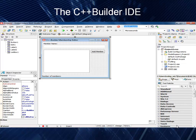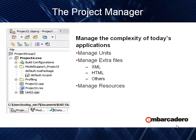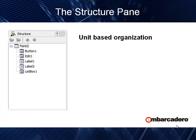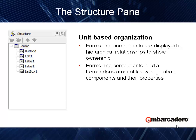C++ Builder IDE has been recognized as one of the fastest ways to develop applications, with all of the bells and whistles you would expect from a cutting-edge development environment. We start with the project manager, which allows us to manage the entire project — its units, additional files whether XML, HTML, or other formats — as well as resources like icons and build management. The structure pane gives us a unit-based organization of our GUI, allowing us to understand forms, their components, and the relationships and ownerships among them.